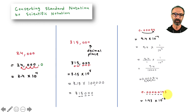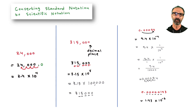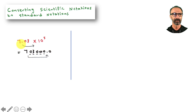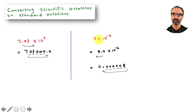Now converting scientific notation back to standard form — the other direction. For 7.03 times 10 to the power 5: increase this number by five digits — it ends up as 703,000. For 8 times 10 to the negative 6: a negative exponent decreases the number by six digits — move the decimal to the left one, two, three, four, five, six places from the original position.